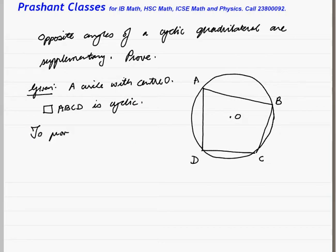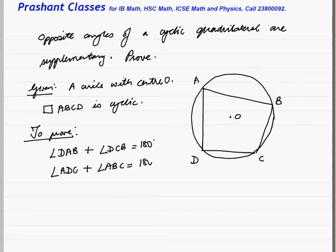To prove: Angle DAB plus angle DCB is equal to 180, and angle ADC plus angle ABC is equal to 180.